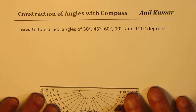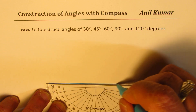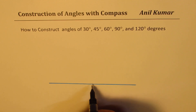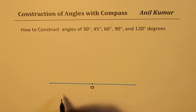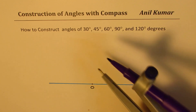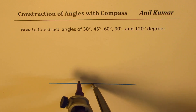Let me sketch a horizontal line here. A horizontal line gives you 180 degrees. If I have a point here — let's call it point O — the angle on the top half is 180 degrees. For 90 degrees, I need to bisect 180 degrees. Let's see how to bisect an angle.